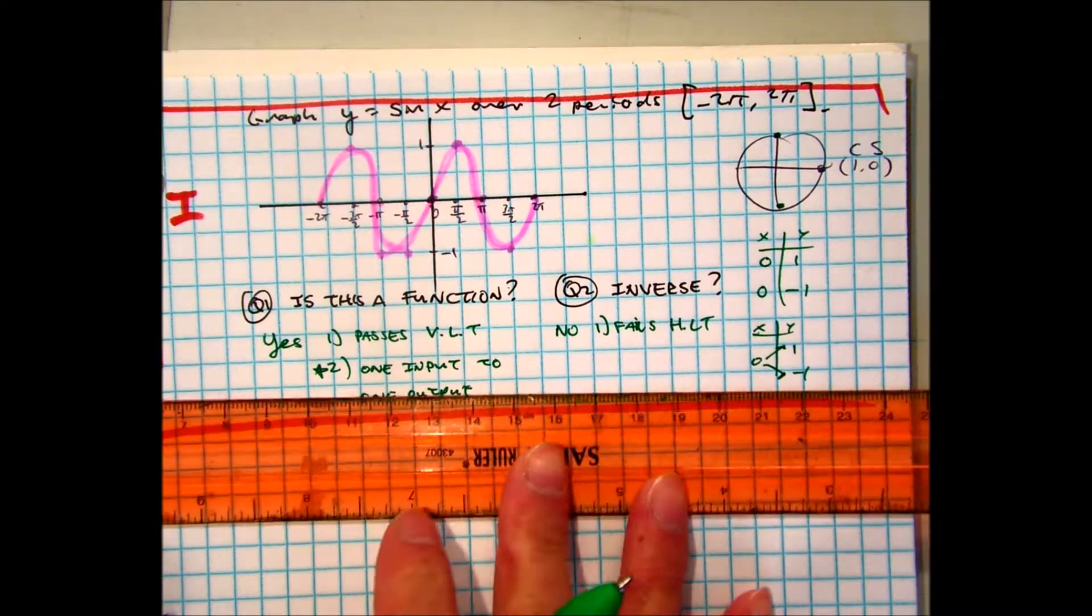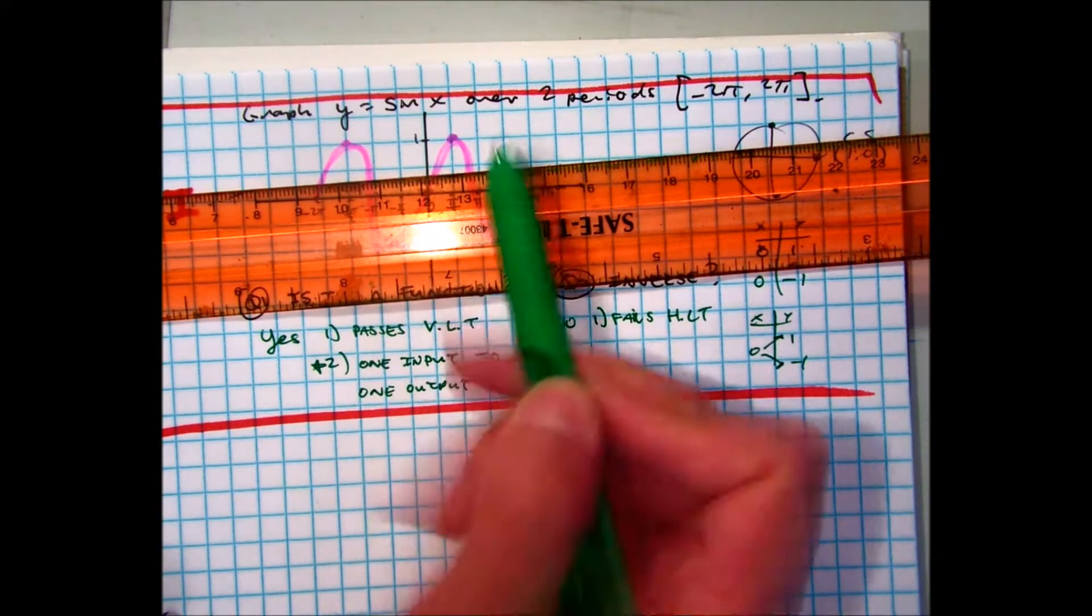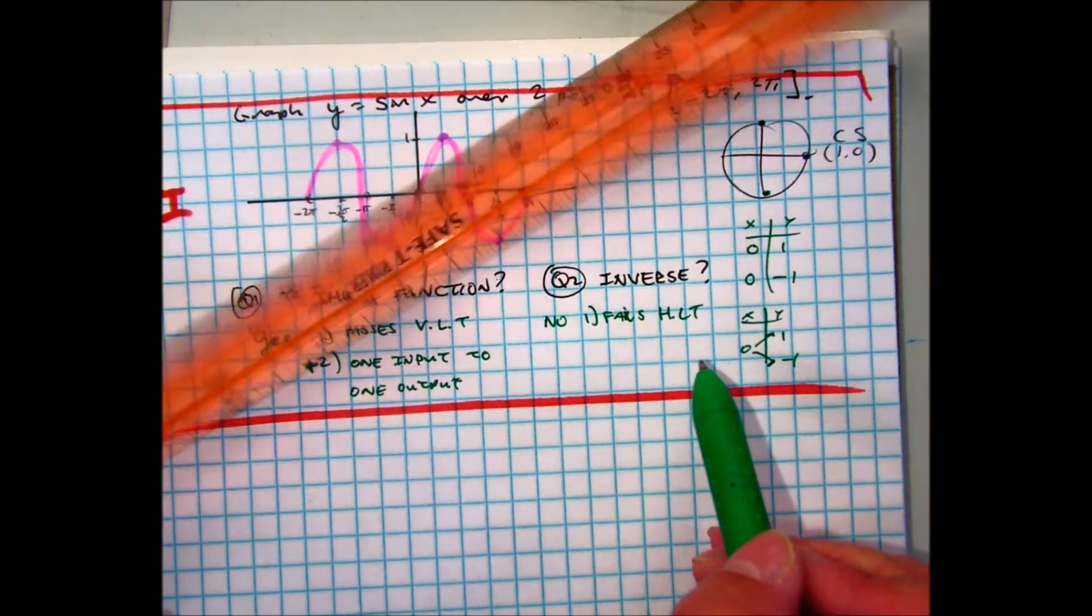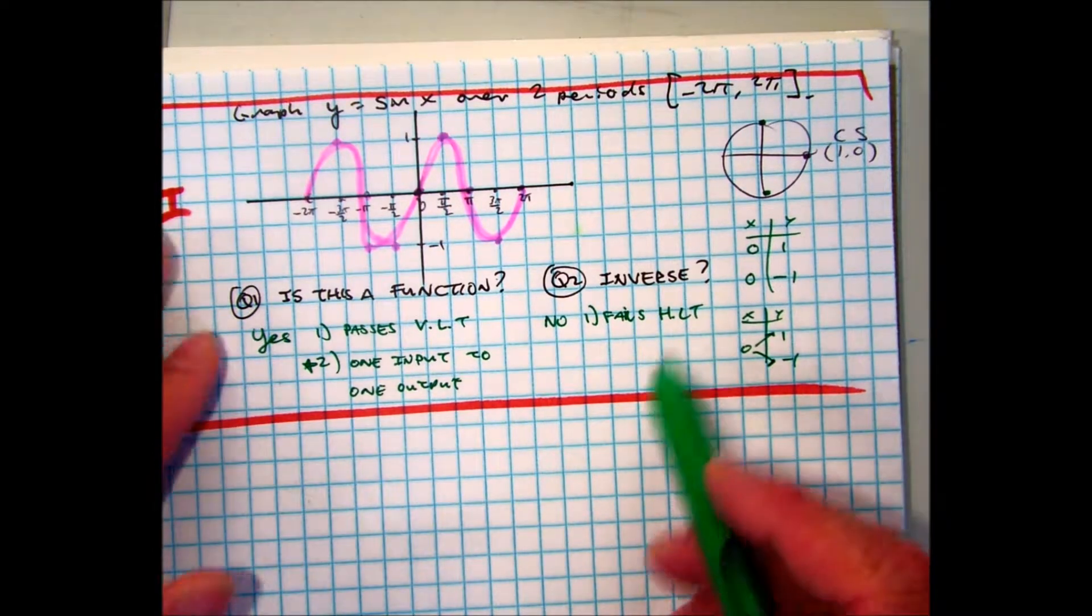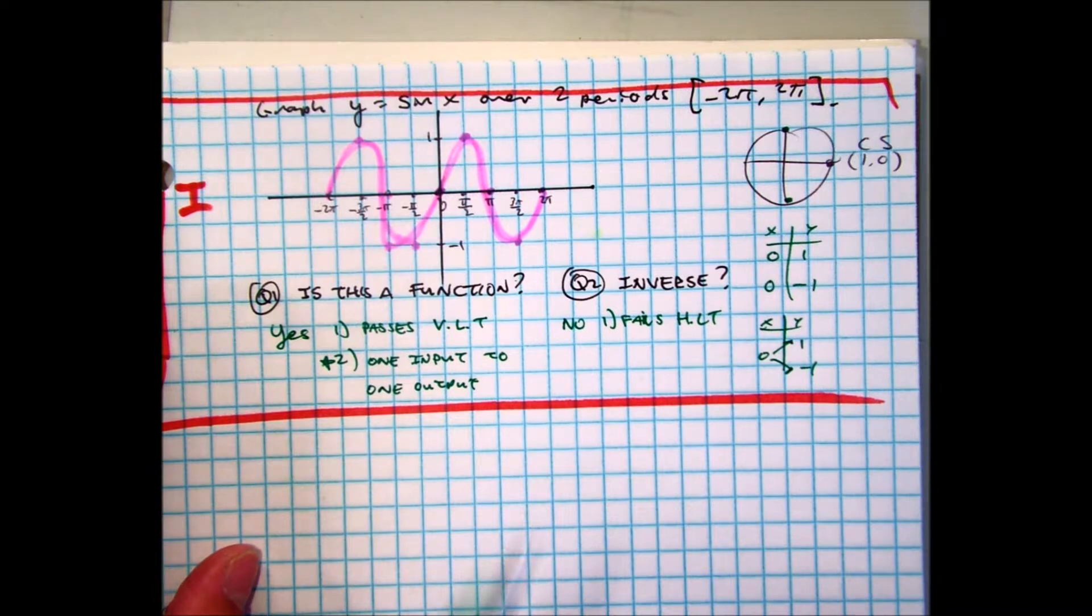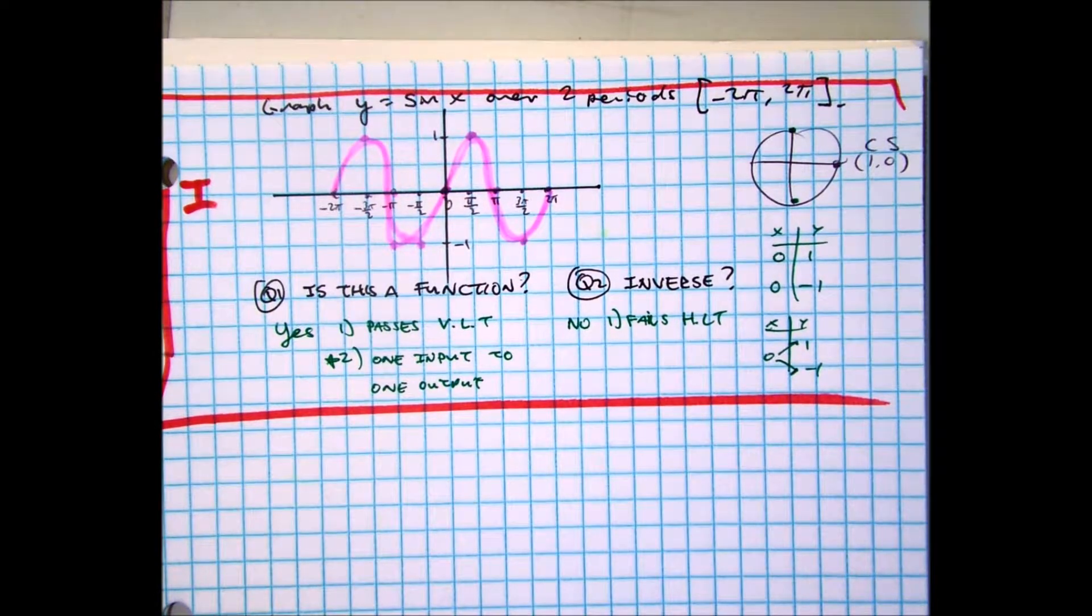Now, if I turn my ruler sideways, that's the horizontal line test. One, two, three, four. Too many, right? I only need one point there. So this fails the horizontal line test. So here's the question. How can I take the inverse of the sine function if it passes the vertical line test, but it fails the horizontal line test?